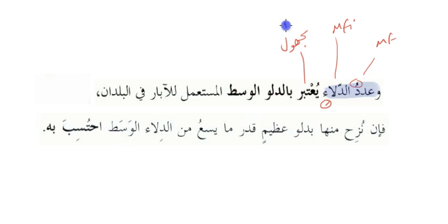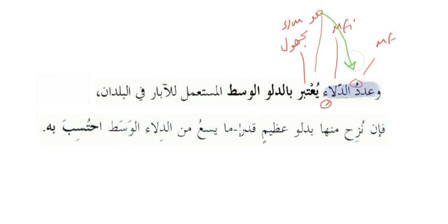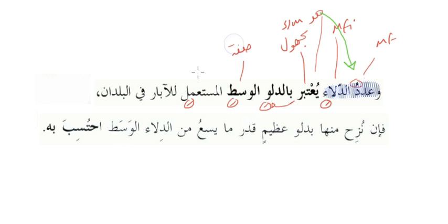يعتبر is single masculine and the ضمير in it is هو which goes back to عدد. بالدلوي الوسطة — the حرف الجر gives دلوي a كسرة. الوسطة and المستعملي are both صفة of دلو.